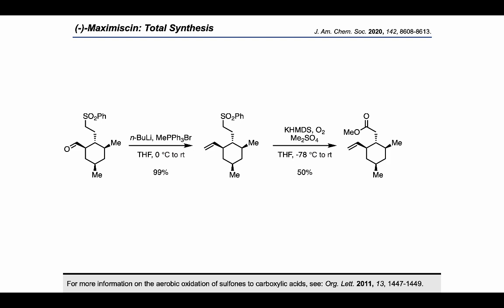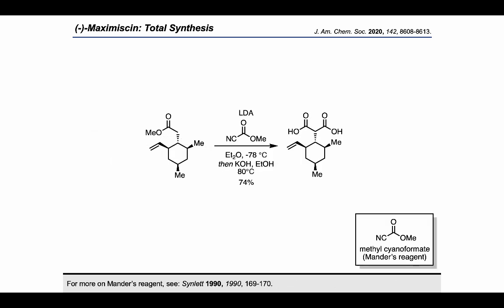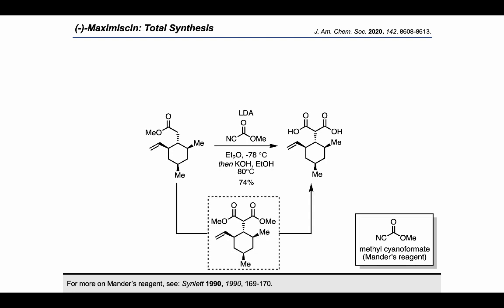A subsequent aerobic oxidation of the sulfone formed the carboxylic acid, which could be trapped with dimethyl sulfate to form the methyl ester. They then used Mander's reagent followed by a hydrolysis step to convert the ester into a malonic acid moiety, going through the dimethylmalonate intermediate. At this point, Fragment 1 was complete.